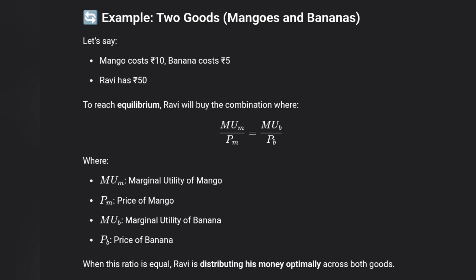Now let's look at a two-goods example. Suppose Ravi has mangoes and bananas. Mango costs 10 rupees and banana costs 5 rupees, and he has 50 rupees. To reach equilibrium, we use the formula: MU divided by P. For two goods, MU of mangoes divided by Price of mangoes must equal MU of bananas divided by Price of bananas.